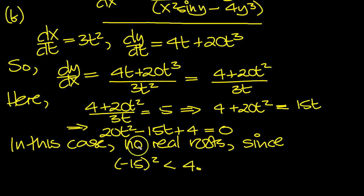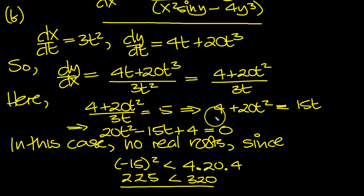4 times a which is 20 times c which is 4. So is 225 less than, 4 times 20 is 320. It is. So yes, there's no real roots to give dy/dx equal to 5.